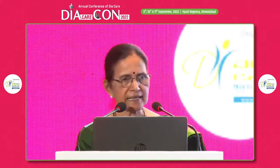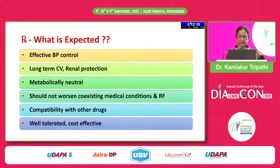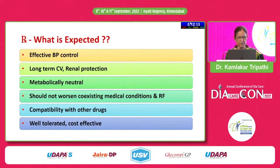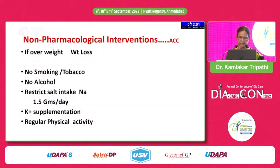What is expected with treatment? Effective BP control, long-term cardiovascular and renal protection. Metabolically, drugs should be neutral — they should not increase glycemia, should not worsen coexisting medical conditions or renal failure. Compatibility with other drugs, well-tolerated, and cost-effective — these are the parameters on which we will start treatment.